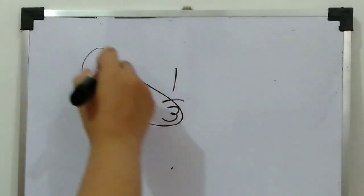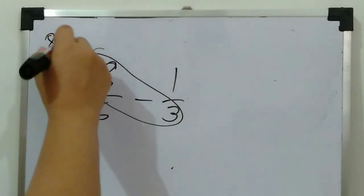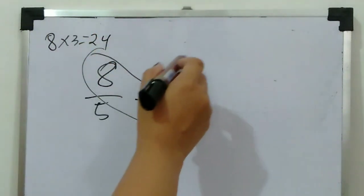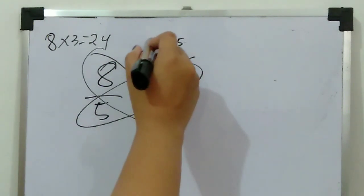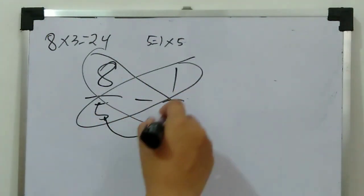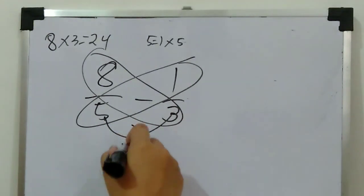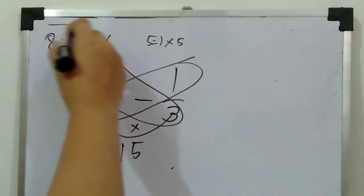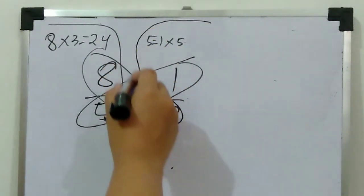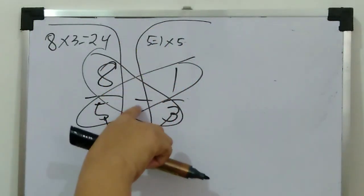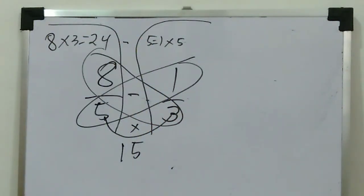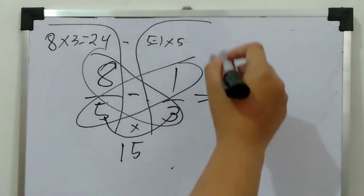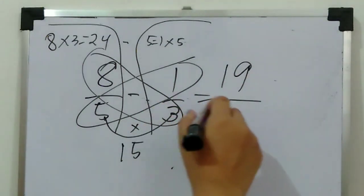I'll answer it now using the butterfly. First is cross multiply: eight times three equals twenty-four. Next, one times five equals five. Next, multiply five times three equals fifteen. What's the operation? The operation is minus. So copy it here. Twenty-four minus five, the answer is nineteen. Copy the fifteen. Nineteen over fifteen.